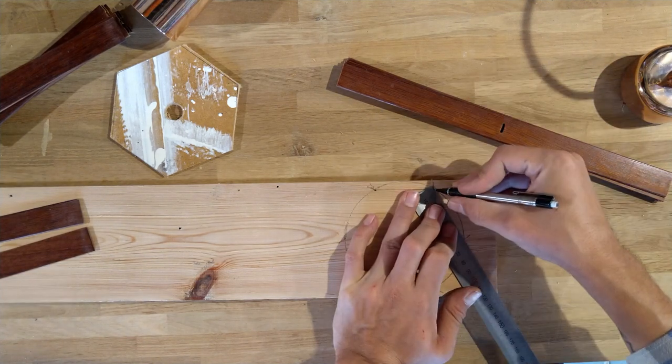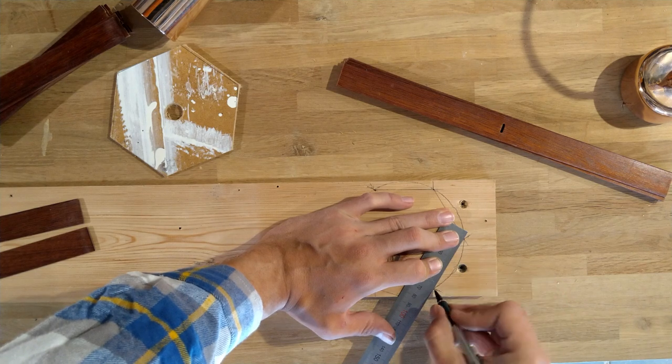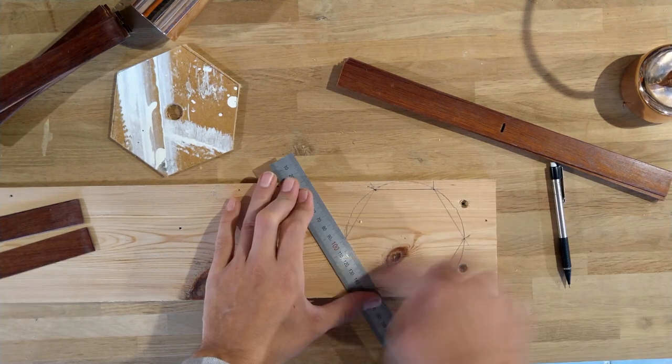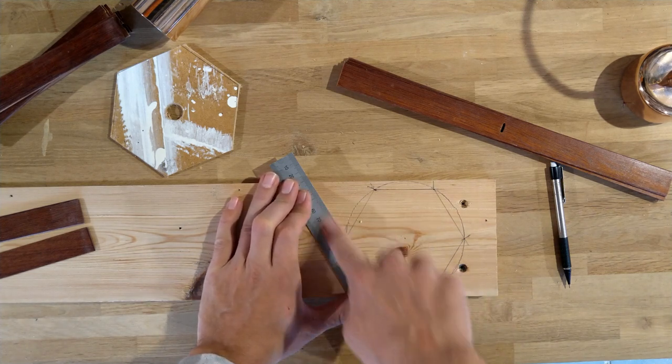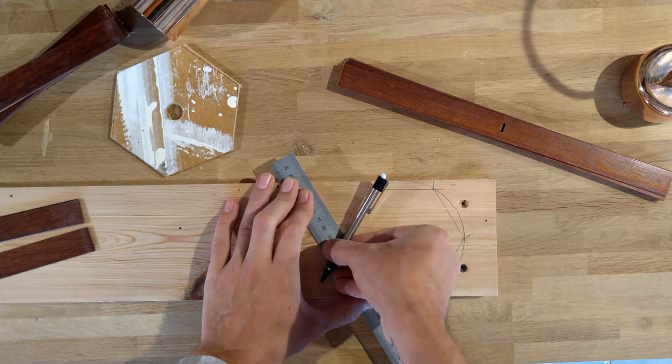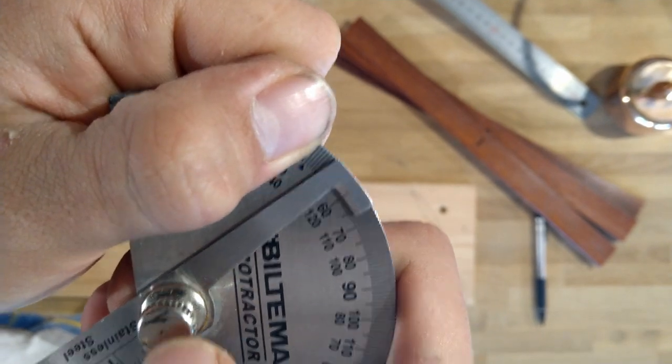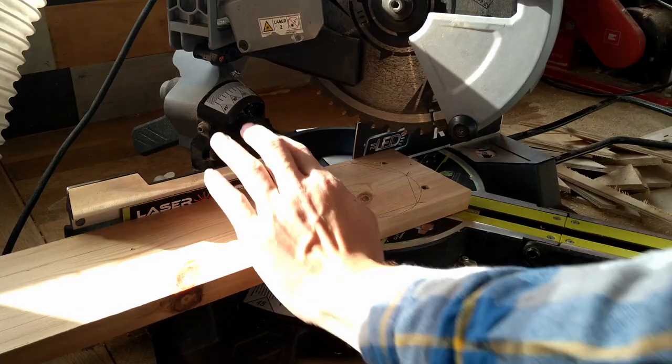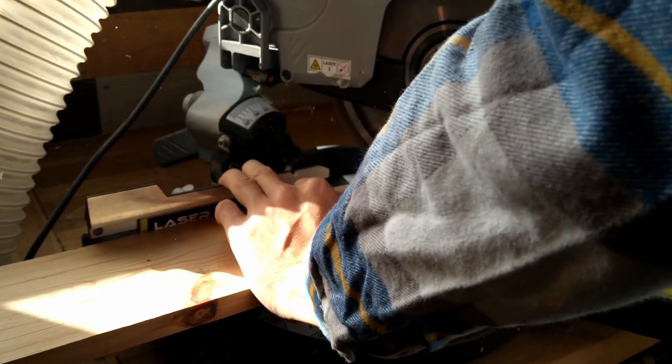Imagine the ruler is a fence of the mitre saw and the pencil is the blade - this is how I'm gonna cut it, and that should be a 60 degree angle. But since the mitre saw blade sits at a 90 degree angle compared to the fence, then it will make a third degree cut.